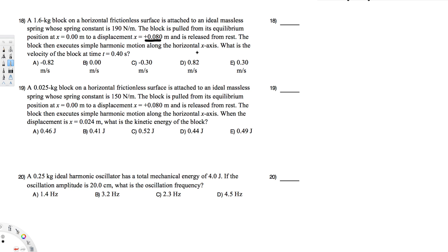What is the velocity of the block at time t = 0.40 seconds? To find the velocity, we use the equation v = -Aω sin(ωt). This is the generic equation for velocity in simple harmonic motion.